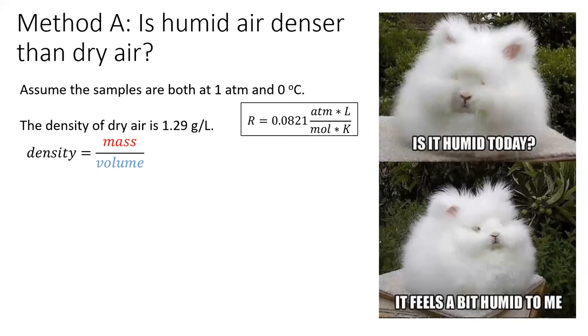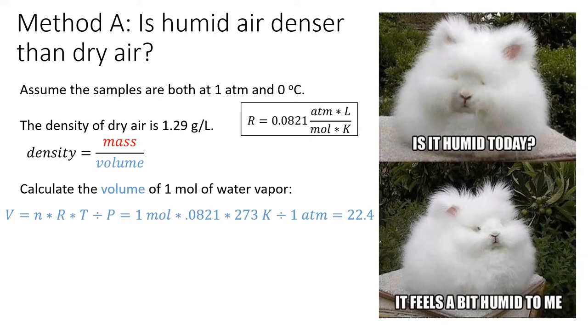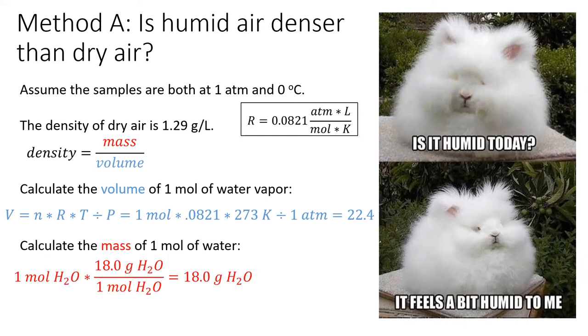I'll start with method A, in which I assume one mole of water and calculate the mass and volume separately. The volume of one mole of gas at standard temperature and pressure was calculated in our last lesson, and it's 22.4 liters. The mass of one mole of water is the same as its molar mass, 18 grams. Lastly, we'll divide 18 by 22.4, and we get 0.8 grams per liter.